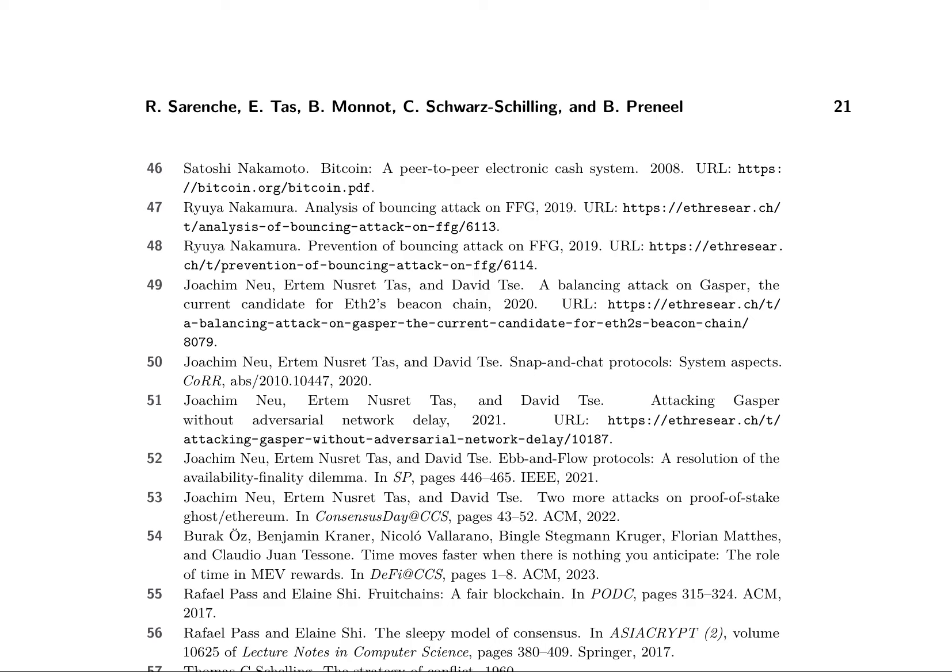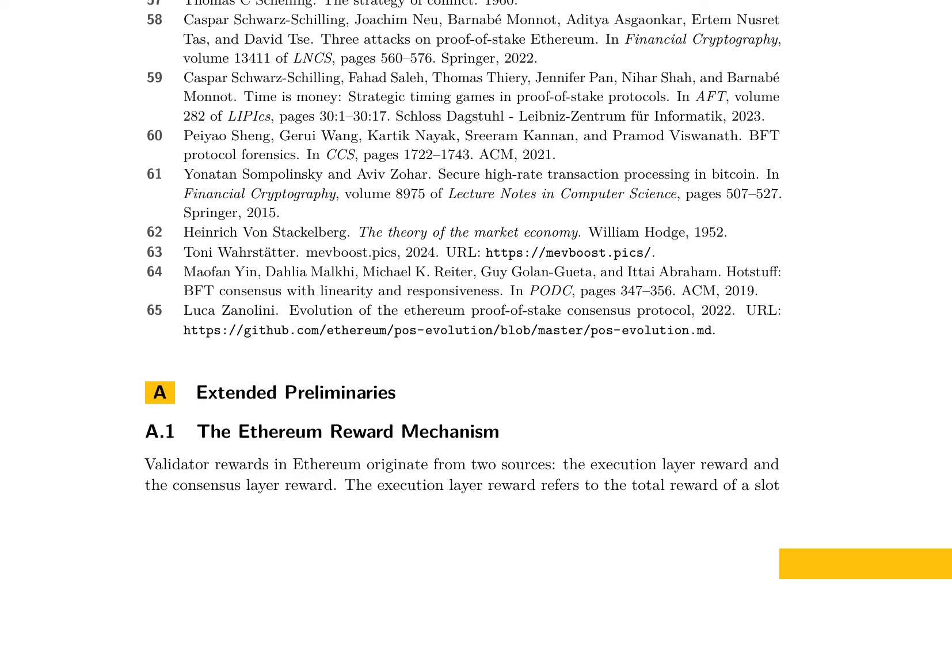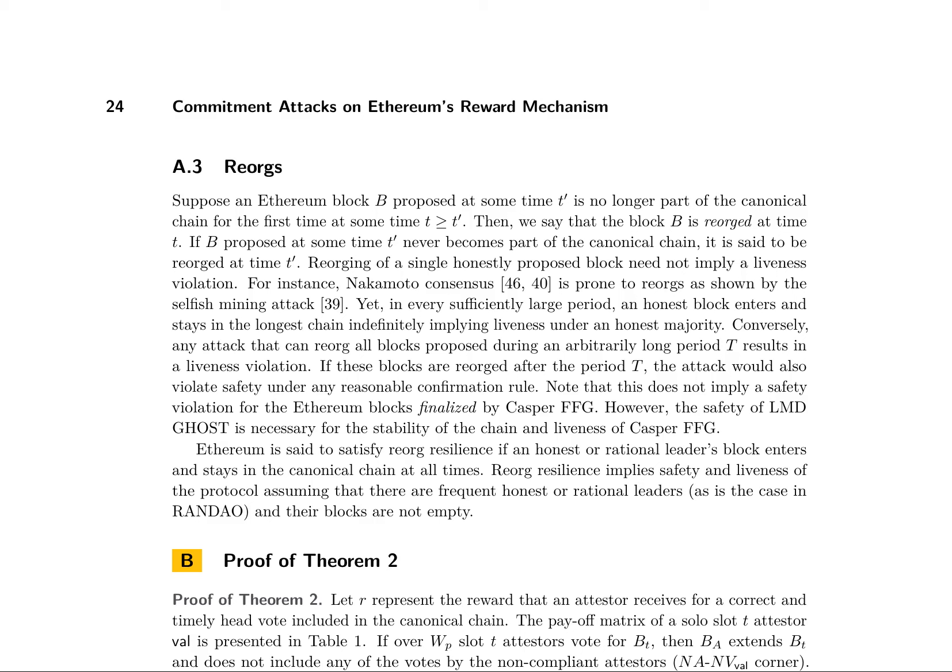The Ethereum reward mechanism is comprised of execution layer and consensus layer rewards. The consensus layer reward is further divided into attestation reward, proposing reward, and sync committee reward. The attestation reward is the largest part, constituting 84.4% of the consensus layer rewards. To receive this reward, the attestation must be included in the beacon chain and be correct and timely. This involves agreeing with the view of the block proposer and matching the justified and target checkpoints of the epoch. The LMD GHOST algorithm is crucial in identifying the canonical chain, and the index function is used to find the non-compliant block with the largest slot within a chain.